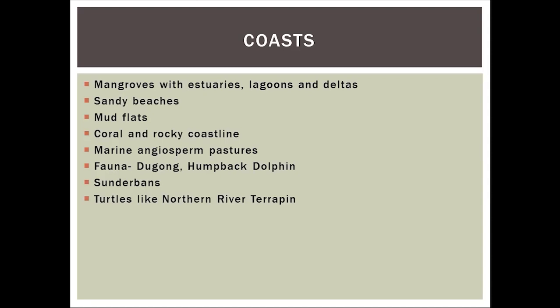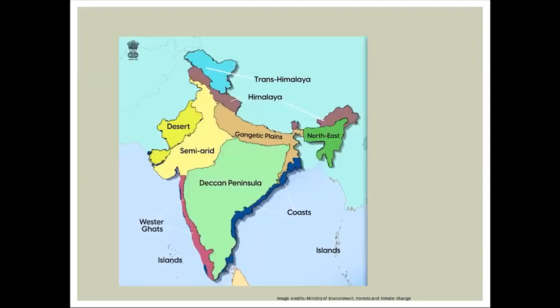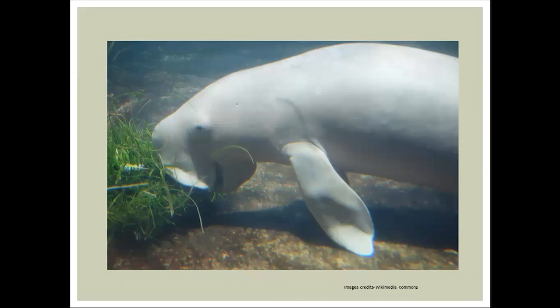There are also deltas found in this region — deltas are created by river deposition when a river enters the sea, and they are usually triangular in shape. Sandy beaches have their own plant communities. Mudflats are coastal wetlands formed by silt and mud brought by the sea. Coral and rocky coastlines are also found. Apart from these, marine angiosperm pastures — sea grass beds used for grazing — can also be found along the coast.